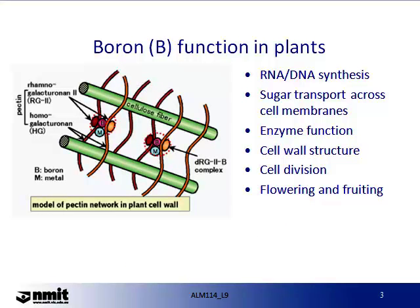Boron has a suite of functions in plants. It is involved in RNA and DNA synthesis and is believed to be important in sugar translocation and carbohydrate metabolism, particularly sugar transport across cell membranes. It is involved in enzyme function, cell wall structure, cell division, and is important in flowering and fruiting.